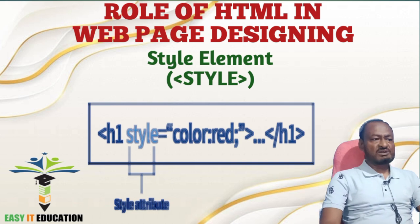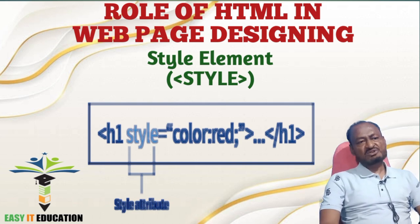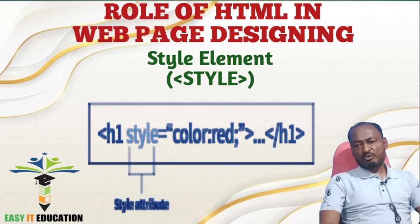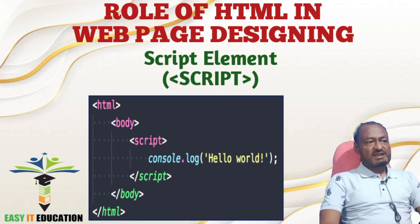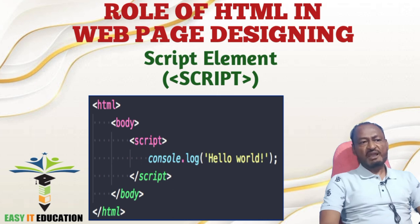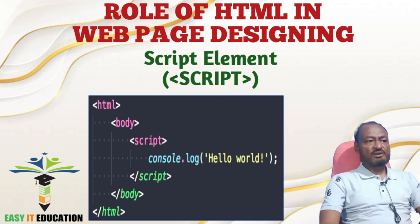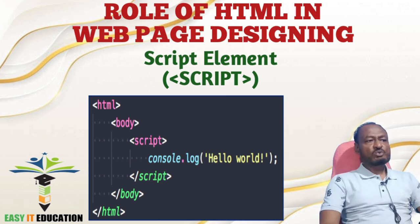Number 16: Style Element. It is used to embed CSS (Cascading Style Sheets) code within an HTML document to define the appearance and layout of elements. Number 17: Script Element. It is used to embed JavaScript code within an HTML document to add interactivity and dynamic functionality. These are just some of the most commonly used HTML elements. HTML is a versatile language and there are many more elements available, often used in conjunction with CSS and JavaScript to create visually appealing and interactive websites.